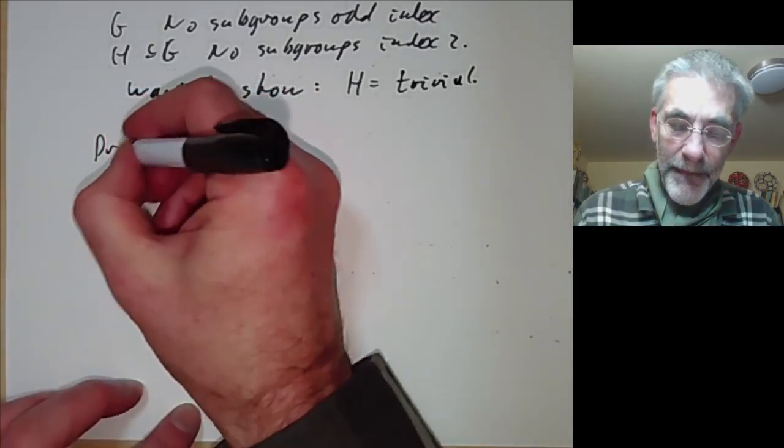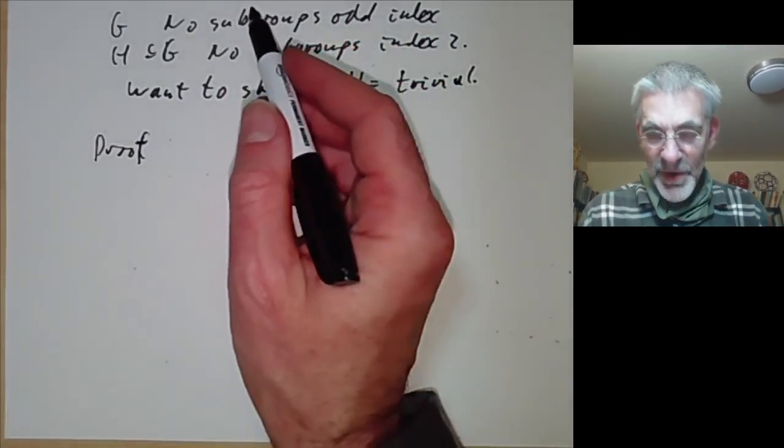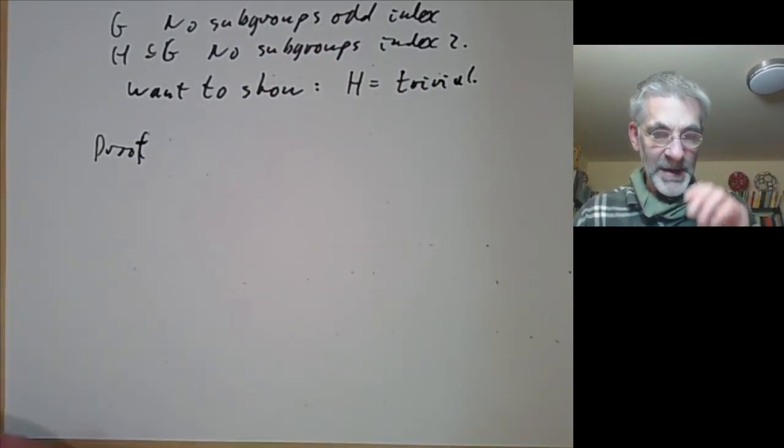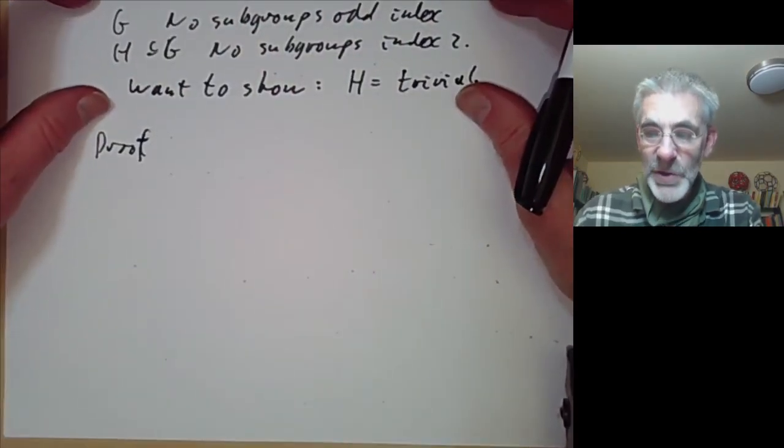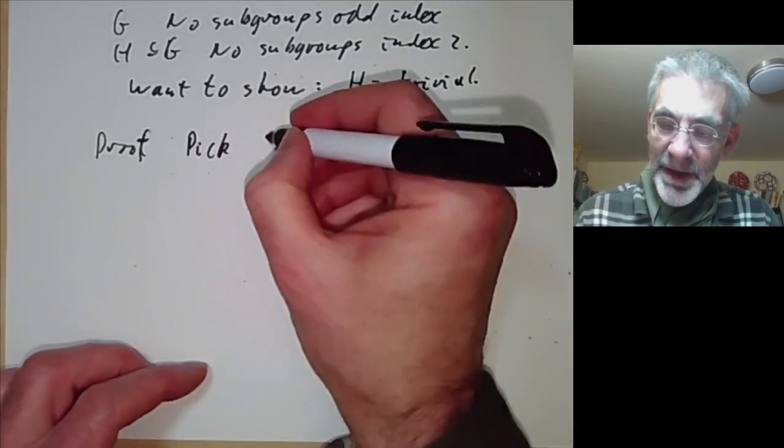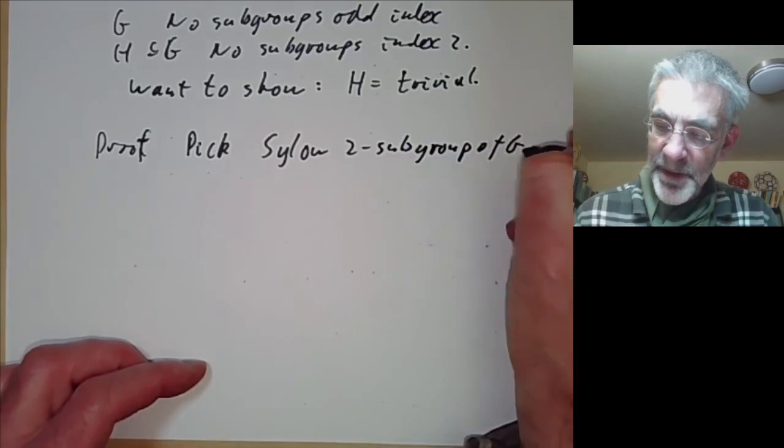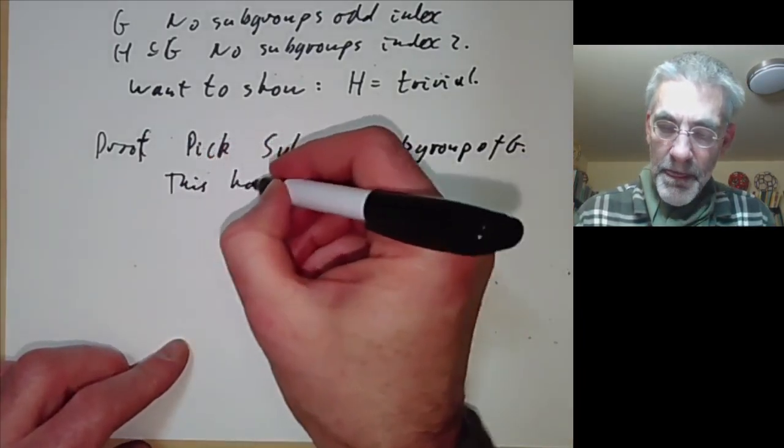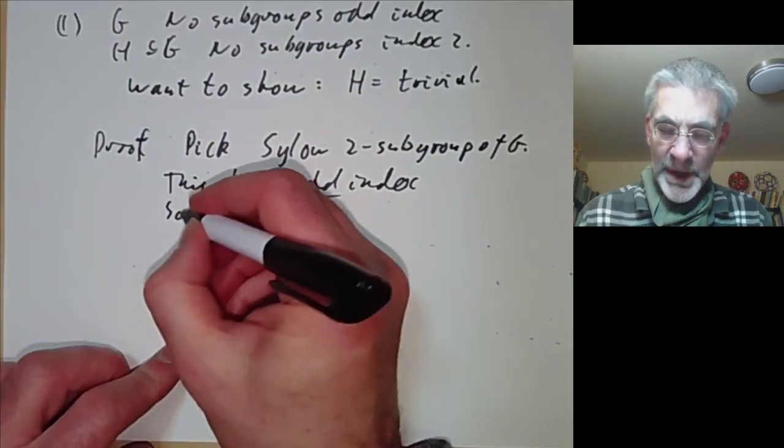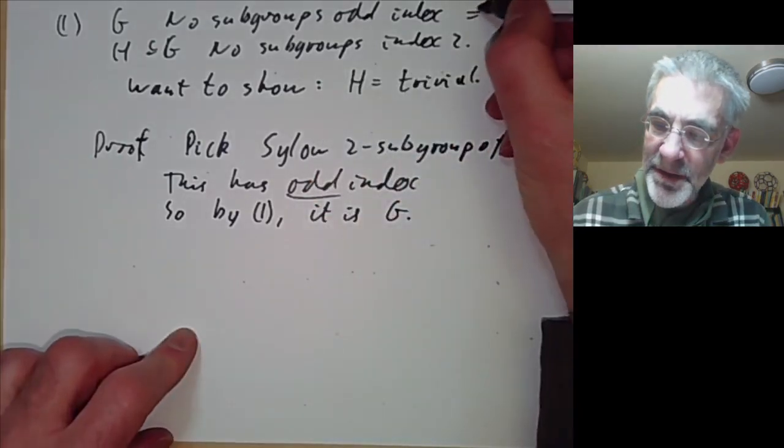Well, this is easy. What we're going to do is just kill off this proof by quoting results from group theory. What we've done so far is we've taken a result about fields that C is algebraically closed and translated it into this purely group theoretical problem using Galois theory. Now we're going to use group theory to solve this. So what we do is we pick a Sylow 2 subgroup of G. And now we notice this has odd index because Sylow 2 subgroups always have odd index. So by 1 it is the whole of G because G has no subgroups of odd index other than G itself.